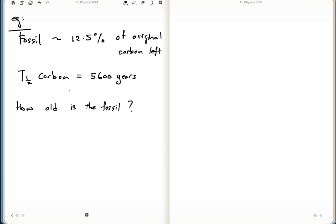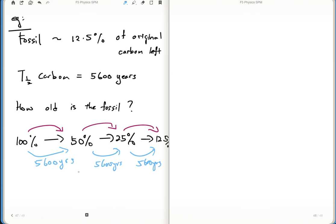Again, 12.5% of original. Initially you have 100%, half of it 50%, half of 50 you get 25, half of 25 is 12.5%. What happened? Say I'm going to have one half-life, two, three. Three half-lives. It's rather straightforward now isn't it? Because t half is 5,600 years. From 100% to 50% is 5,600 years. Another 5,600 years. Another 5,600 years. So therefore, 5,600 times 3. That would be your answer.